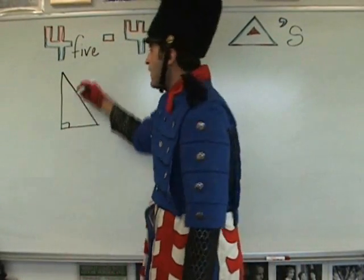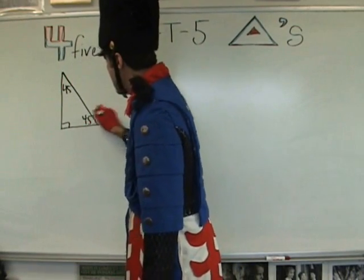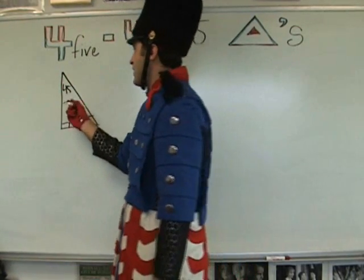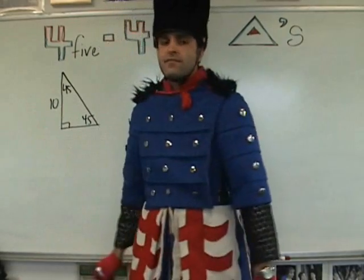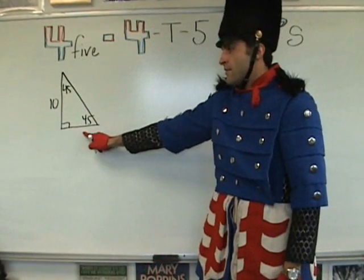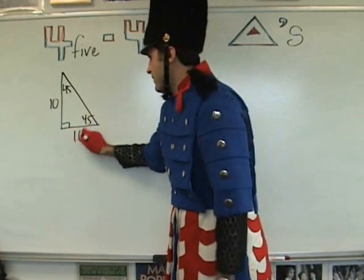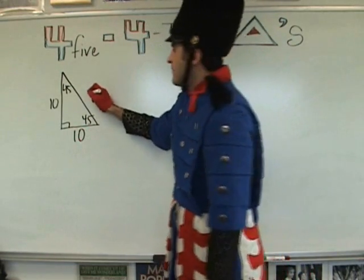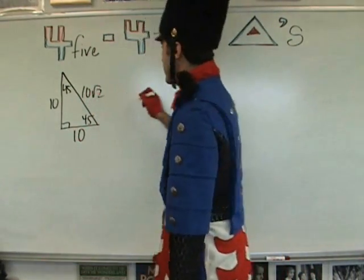Alright, so 45-45-90 given. And let's say this was 10. Fill her up. Yes? That one's 10 too. Yup. Yeah, and then the hypotenuse is 10 times the square root of 2. 10 times the square root of 2. Okay, let's make it more challenging.